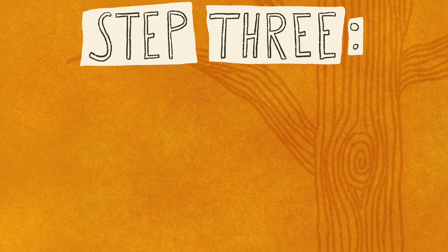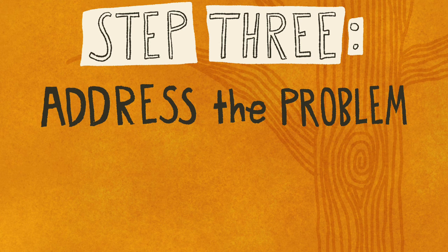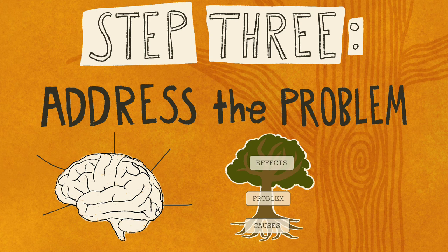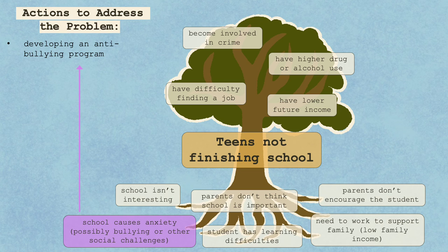Once you've established a problem and clarified likely causes and effects, it's time to begin thinking about what the students can do to address the problem. It is good to brainstorm a variety of possible responses before selecting one. The information in the tree gives students a place to start for brainstorming ways to influence the problem. Different causes can suggest possible solutions. For example, if anxiety and bullying are a cause, then one possible action could be developing an anti-bullying program — something older students do for younger students.